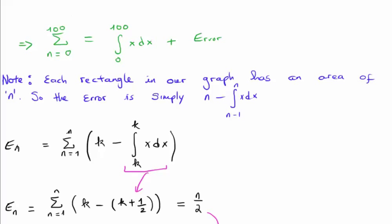So putting this error into an expression or an equation is written here. So you have the summation of n equals 1 to n, we have k minus the integral of k minus 1 to k of x dx.